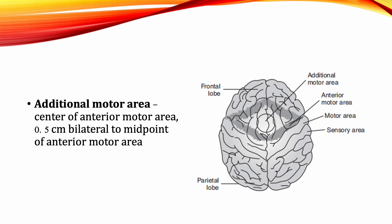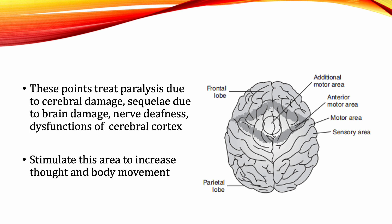Additional Motor Area: This area is located at the center of the anterior motor area, 0.5 cm bilateral to the midpoint of the anterior motor area. These points function to treat paralysis due to cerebral damage, sequelae due to brain damage, and nerve deafness, as well as dysfunctions of the cerebral cortex. Stimulate this area to increase thought and body movement.